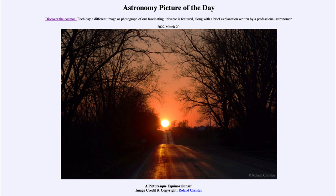Today's picture for March 20th of 2022 is titled 'A Picturesque Equinox Sunset.' Here we see the sun setting in the distance, directly in front of this road — appearing to set right along it, meaning we're looking west. Many roads run north-south or east-west, so on an east-west road you would see the sun rise or set right along it. This happens because we are at the equinox — the day of equal daytime and nighttime, with 12 hours of daylight and 12 hours of darkness.